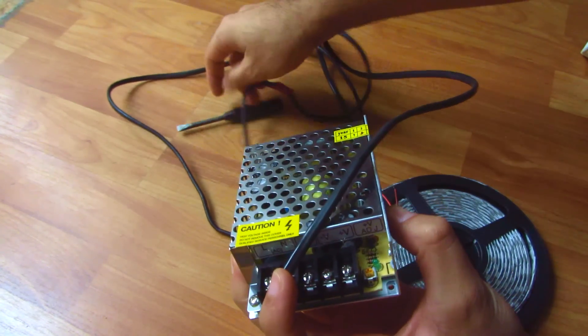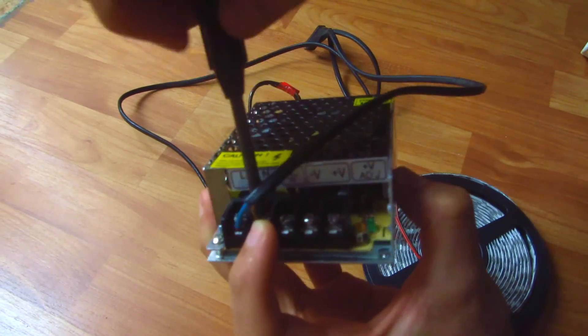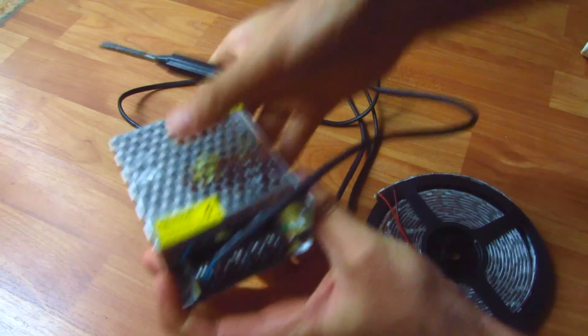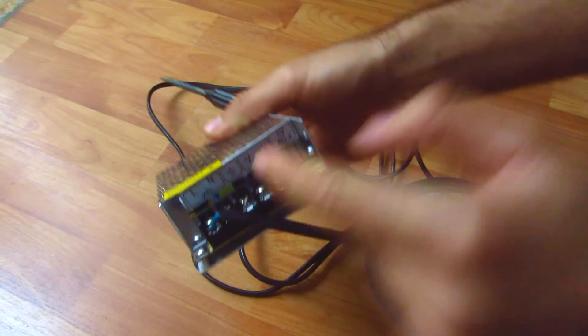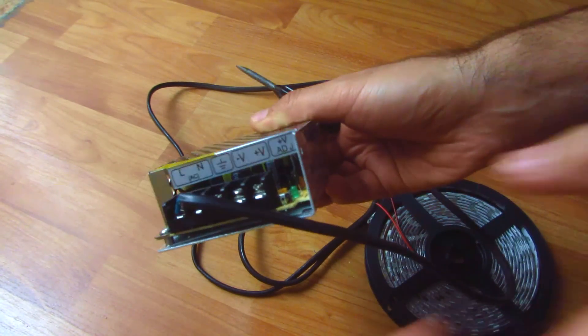Let's tighten these screws. That's enough. I just connected the line and the neutral - that is the 220 volts - to this transformer.